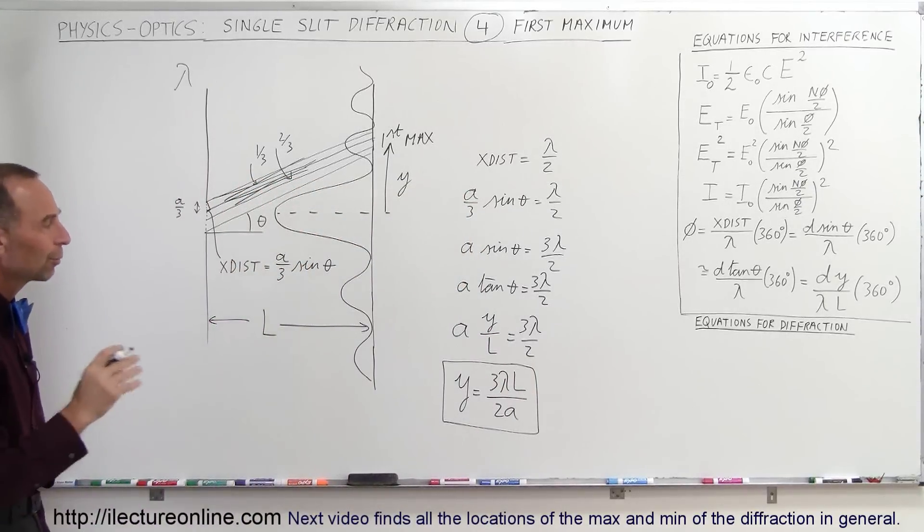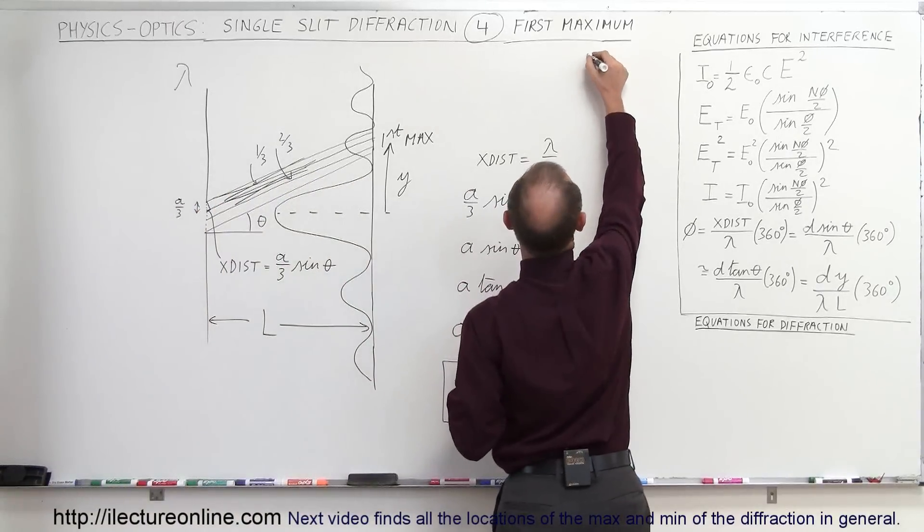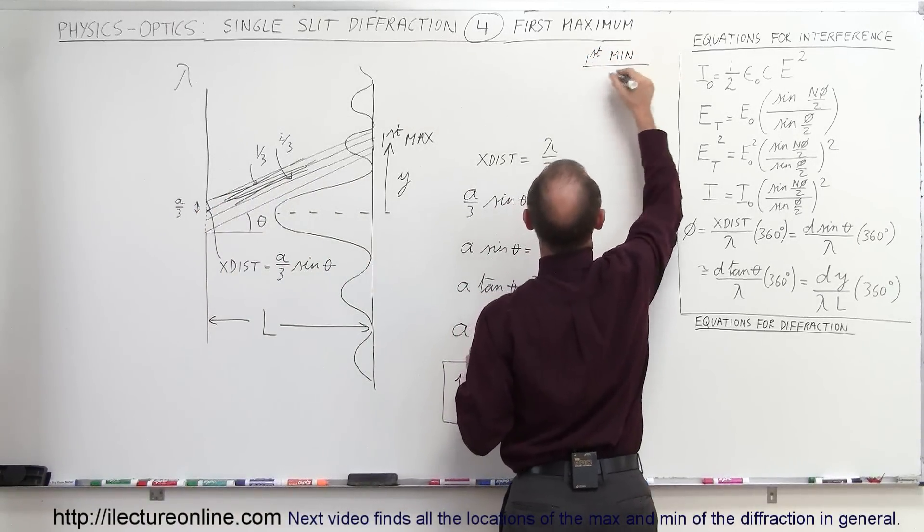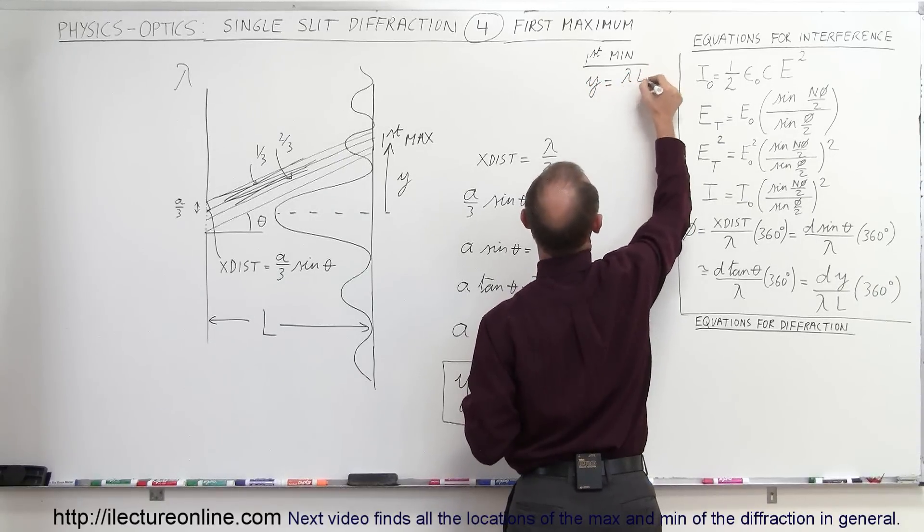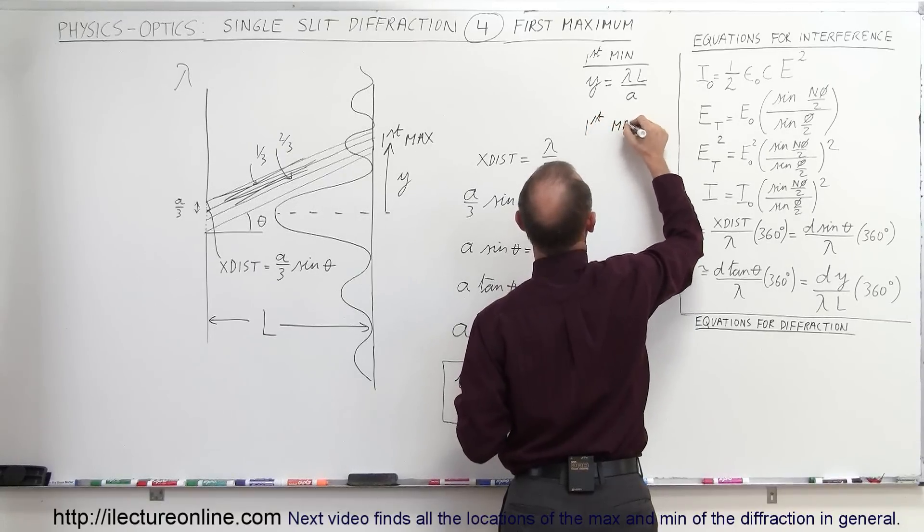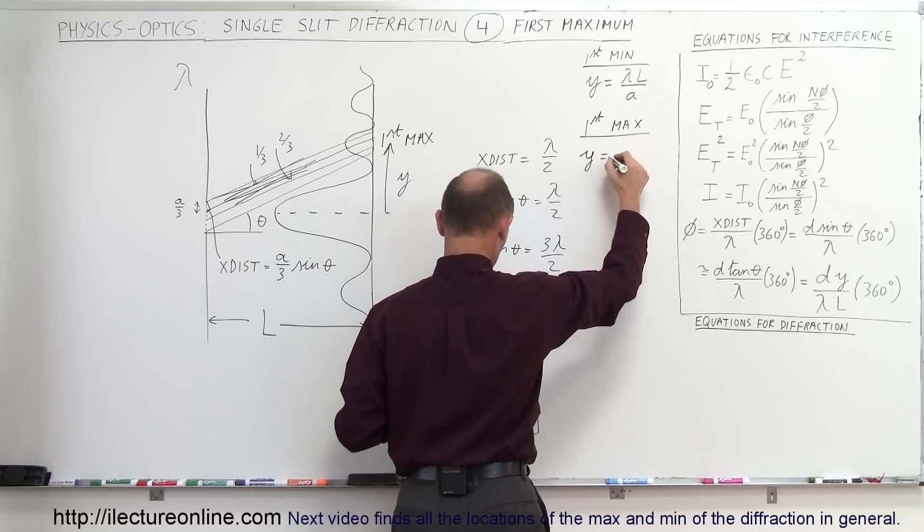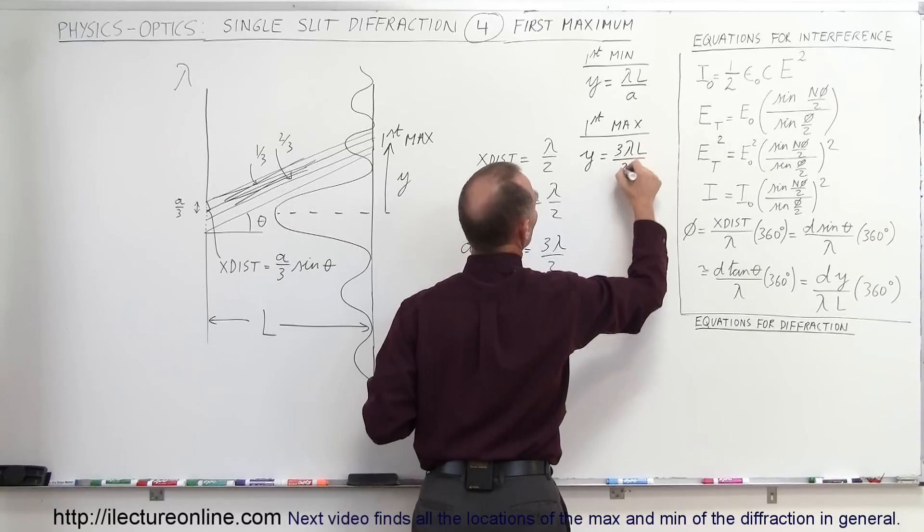Now we should write down the ones we found so far, remember for the first minimum, so for the first minimum, the condition was that y was equal to lambda l divided by a, lambda l divided by a. For the first maximum, as we just now found, y would be equal to 3 lambda l over 2a.